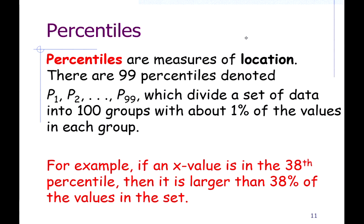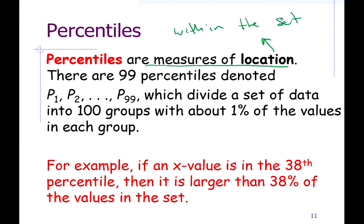So a percentile is a measure of location — location within the set. Where does that value lie? If you put all the values in numerical order from smallest to largest, a percentile is the location of where a value lies in that set relative to the other values.